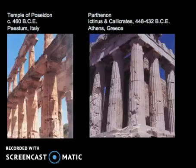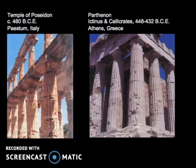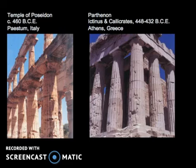We see the Temple of Poseidon, which is slightly earlier, and its columns are squatter and thicker. Now focusing on the Parthenon — perhaps the most famous Greek temple — which has slender columns that surround the building, making it peripteral. It includes optical effects that provide balance and equilibrium. In both cases, the wood roofs are long gone.